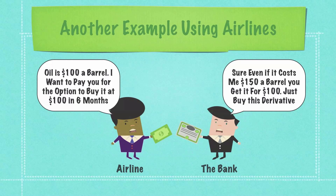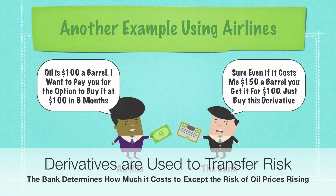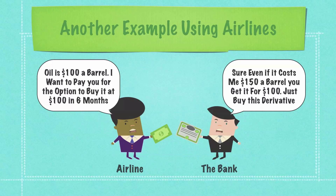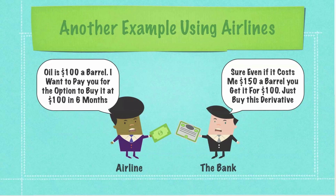Another example is with airlines. Airlines often will go to banks and they will buy a derivative, and they will say, I want to give you a certain amount of money to guarantee that I can buy fuel in the future for $100. How much do I need to pay you so that I can hedge against the risk of oil prices rising above $100 a barrel? What a lot of people don't realize is that bank does not purchase that barrel of oil and hold onto it for six months. They instead take on the risk that they will have to buy that barrel of oil for, say, $150 in the future and then sell it for $100, losing $50 per barrel.